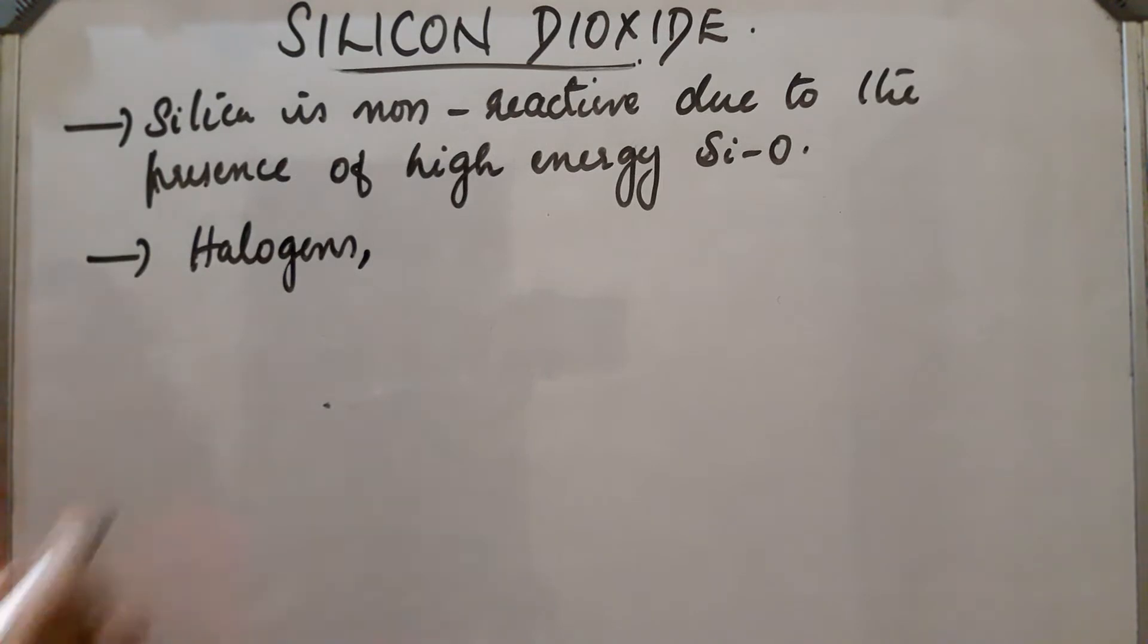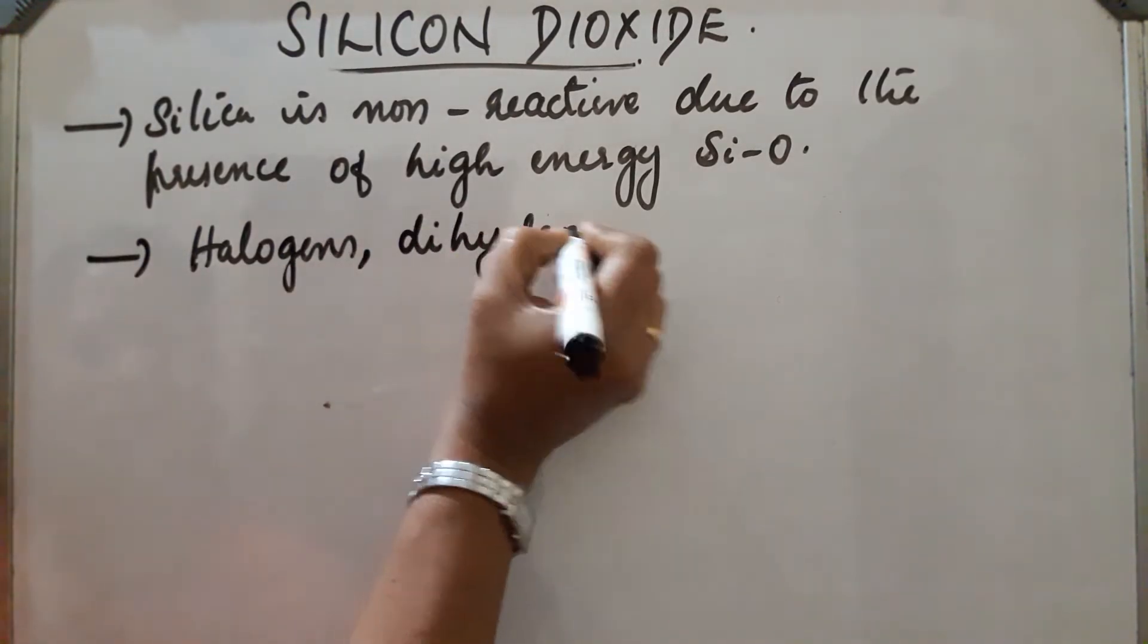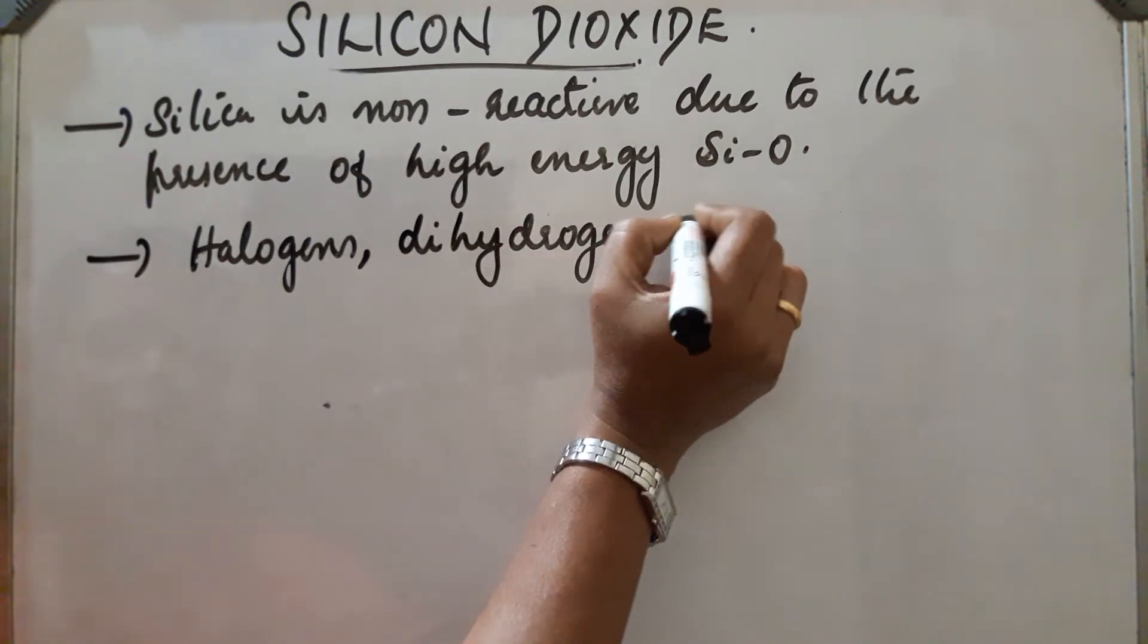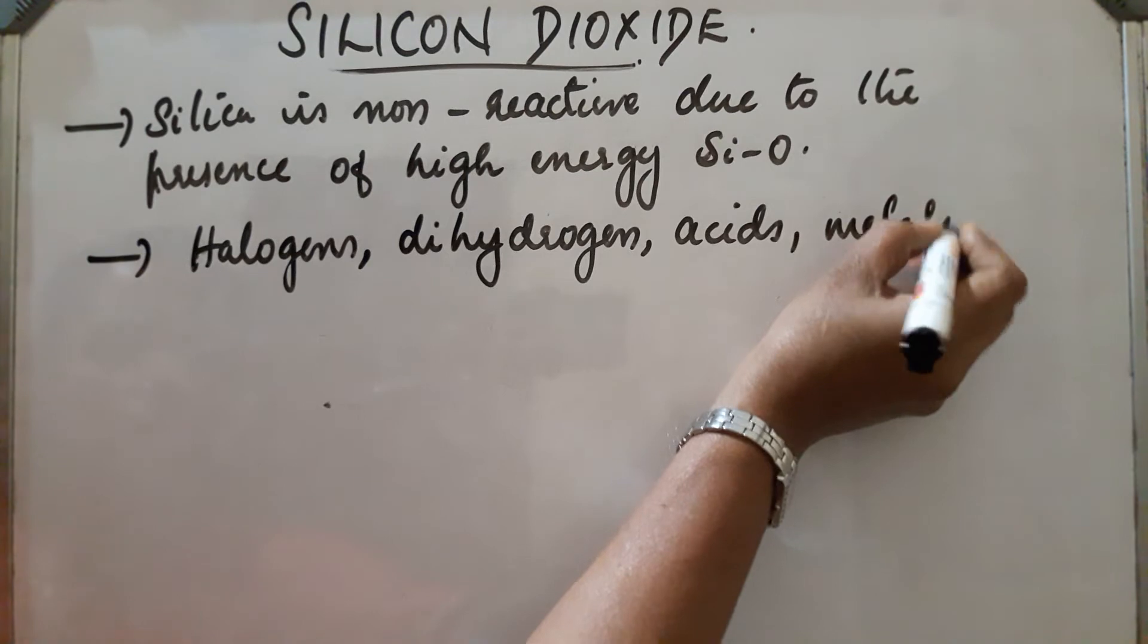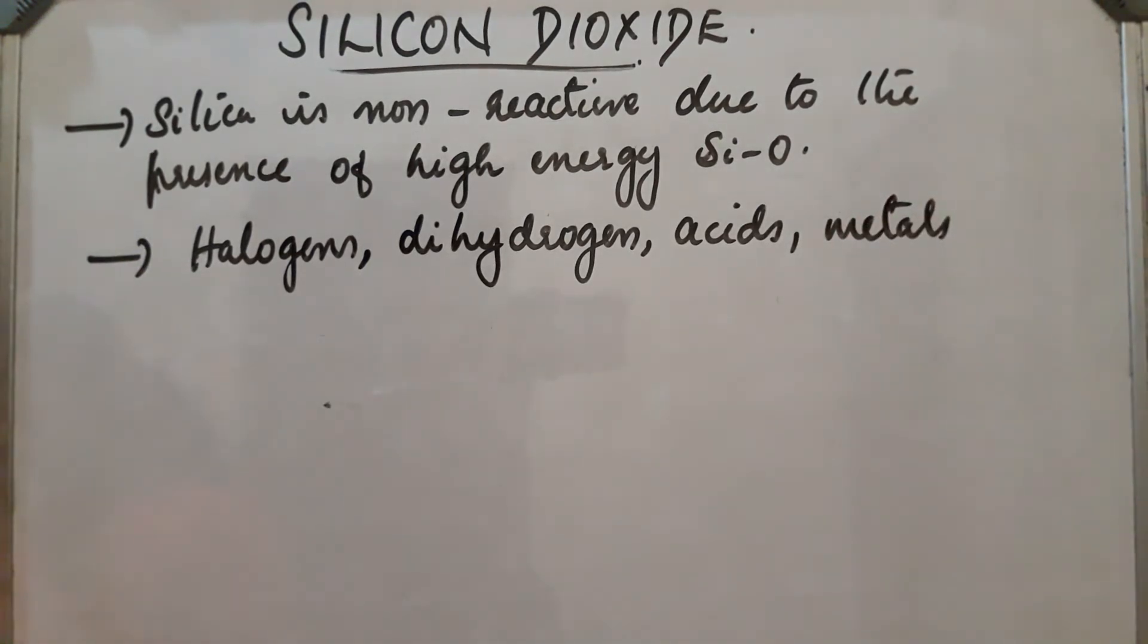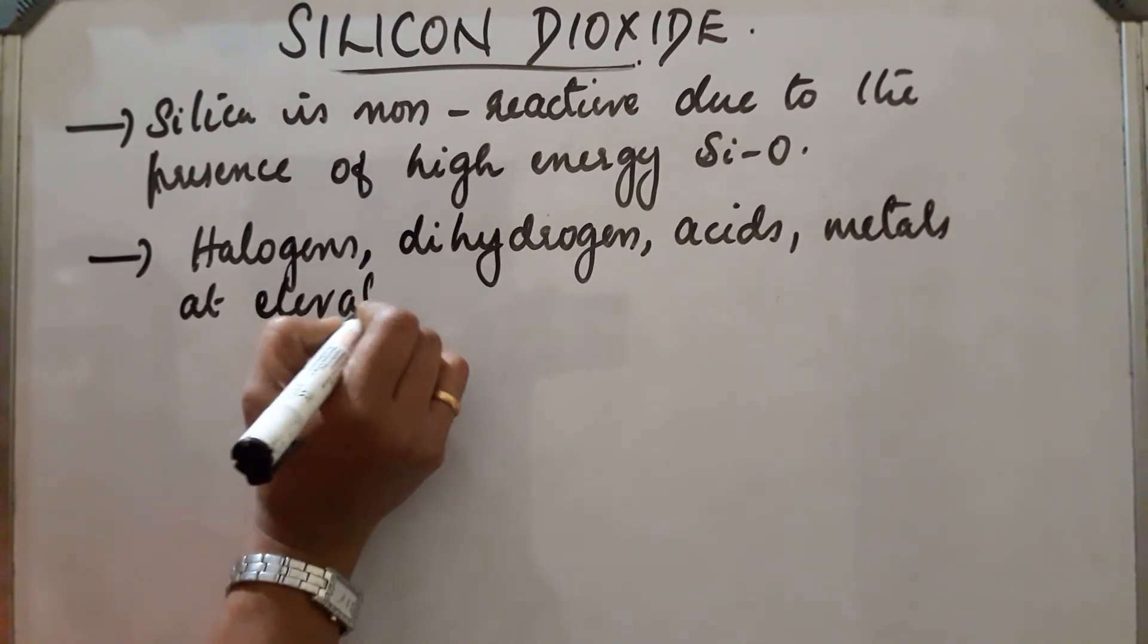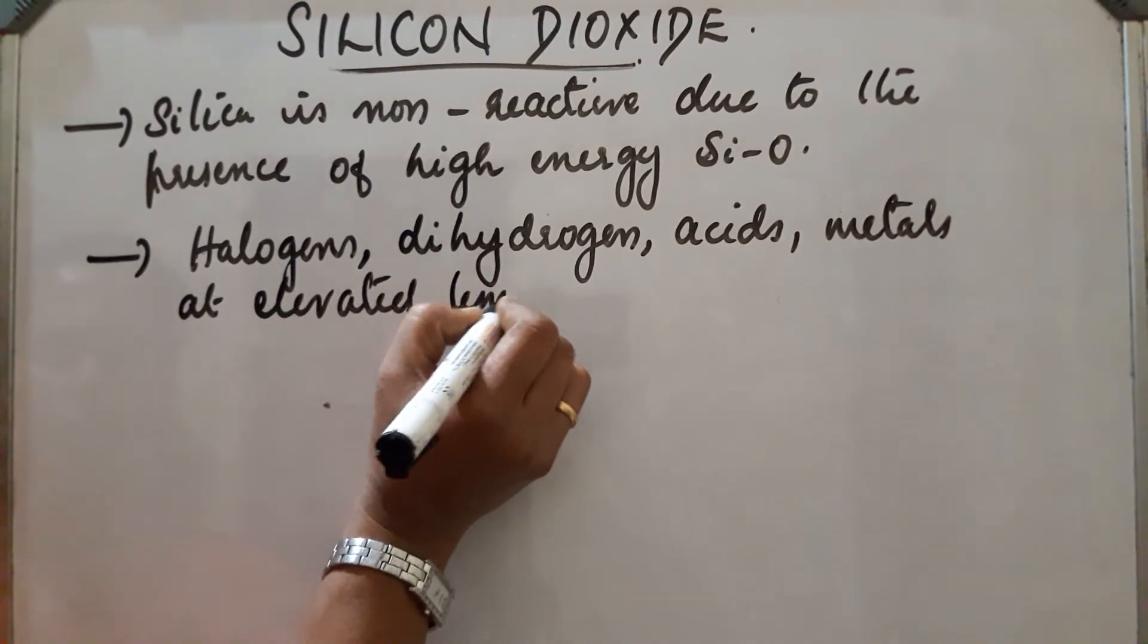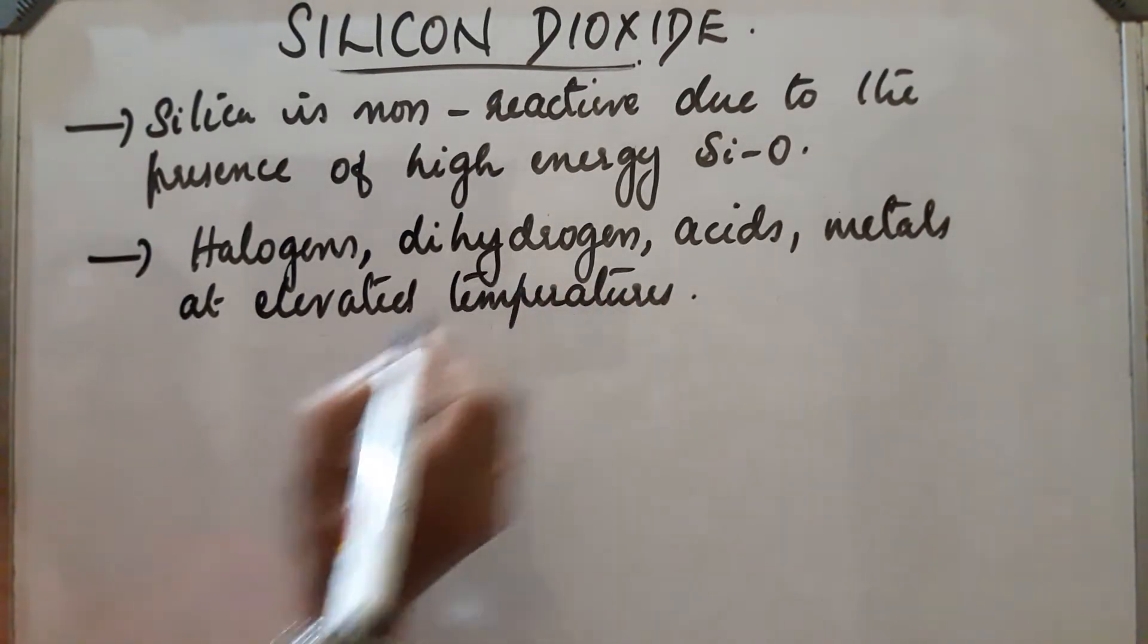Then dihydrogen, acids, certain acids, then metals. Most of the acids are unreactive, then with certain metals even at elevated temperatures, even at elevated temperatures.